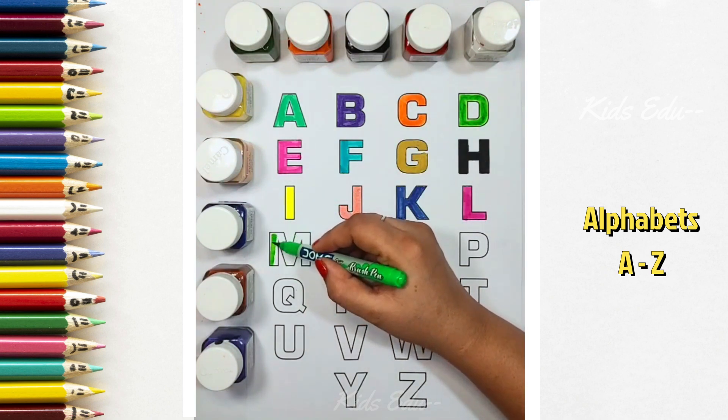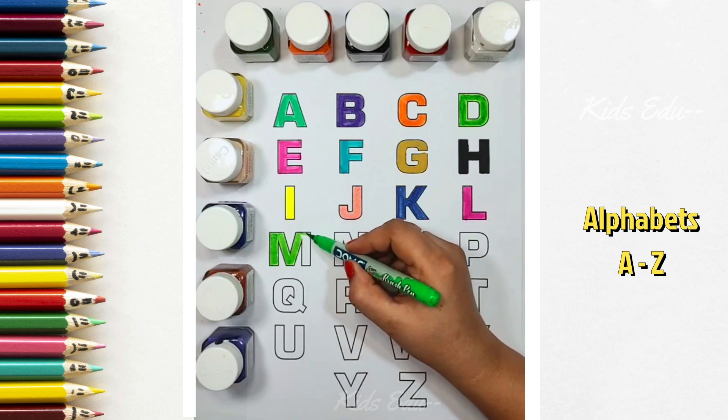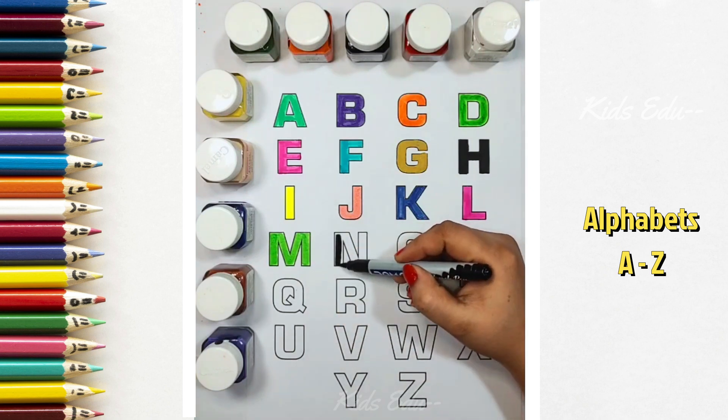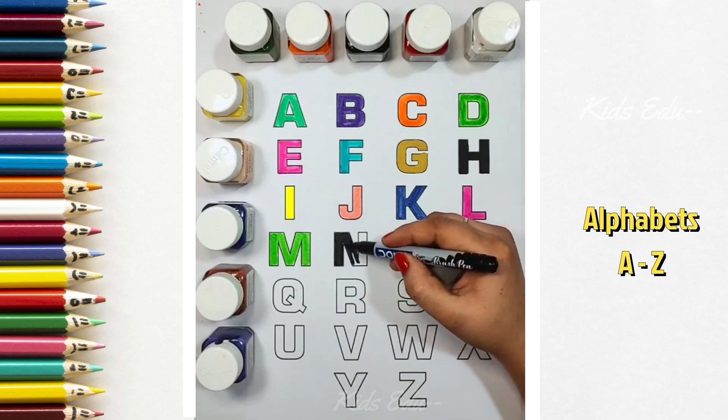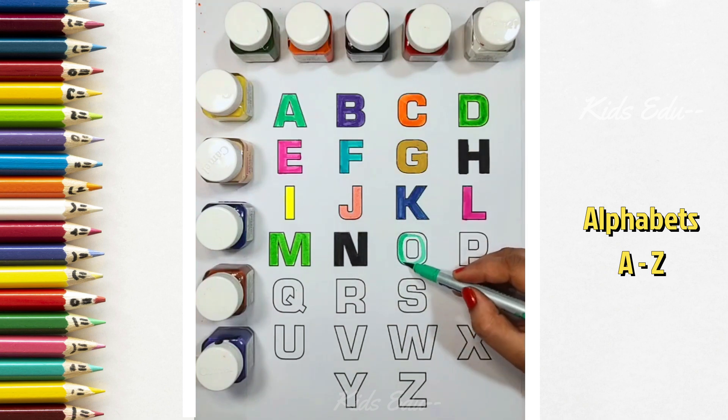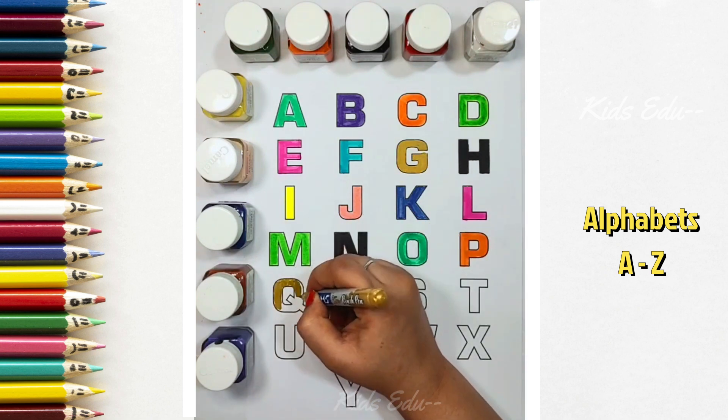Light green color, M, M for Mango. Black color, N for Nest. Green color, O, O for Ostrich. Orange color, P, P for Parrot. Golden color, Q, Q for Queen.